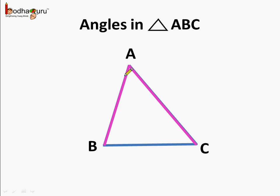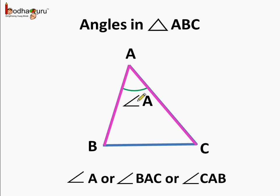Lastly we come to angle A. It is called angle A because line segment AB and line segment AC make an angle at the vertex A. We can also call angle A as angle BAC or angle CAB. Again, A is written in the middle, so it represents angle A only.